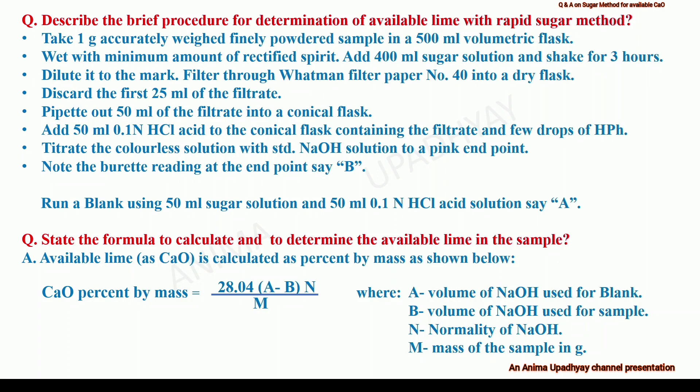Repeat the procedure to get a concordant value. We will also run a blank using 50 ml sugar solution and 50 ml of 0.1 normal hydrochloric acid solution. Record the burette reading at the end point — say it is A. We will use the titer values for sample as well as for blank in the formula to calculate the available lime.